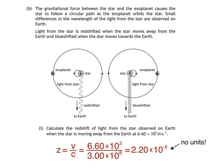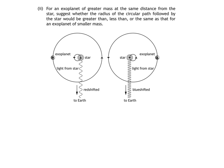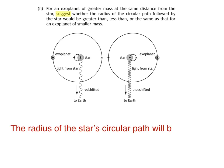When the light's blue-shifted, which happens when the star moves towards the Earth, we get a negative value. For part 2, if an exoplanet has greater mass at the same distance from the star, we need to suggest whether the radius of the circular path followed by the star would be greater than, less than, or the same as that for an exoplanet of smaller mass. If the exoplanet had a greater mass, then the gravitational force between the star and the exoplanet would be greater. The force exerted on the star due to the exoplanet would be equal in size but opposite in direction to the force exerted on the exoplanet due to the star. This means that the radius of the star's circular path will be greater.